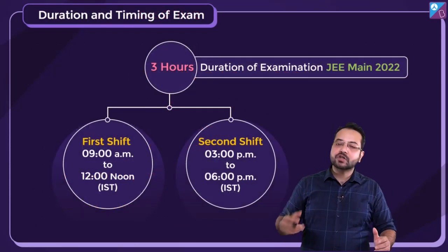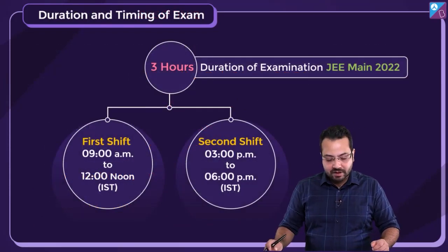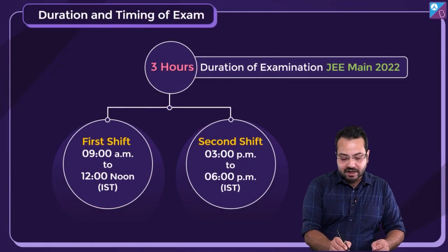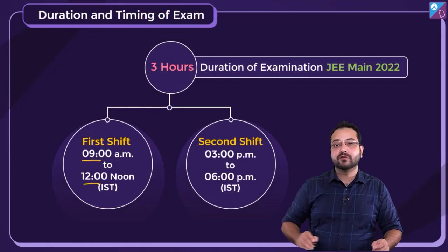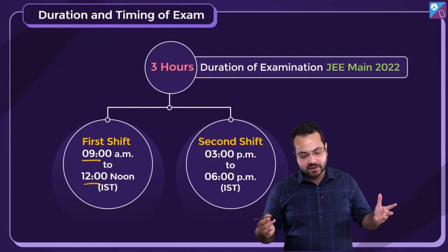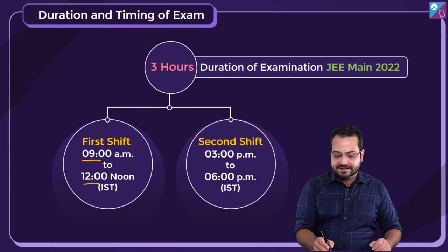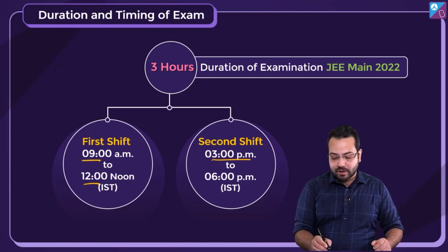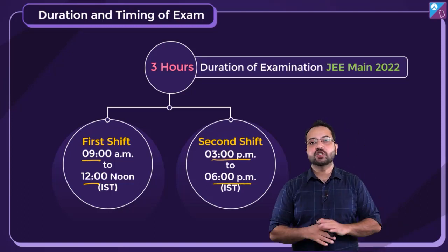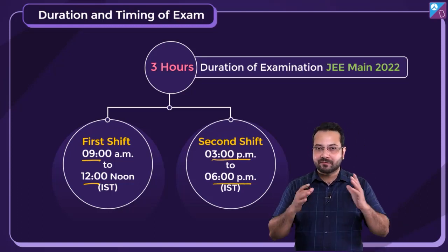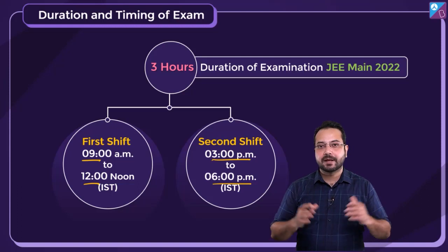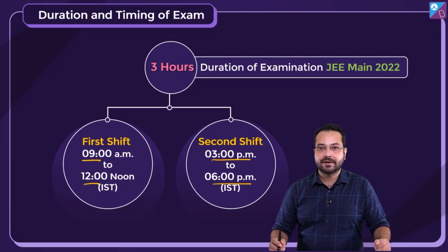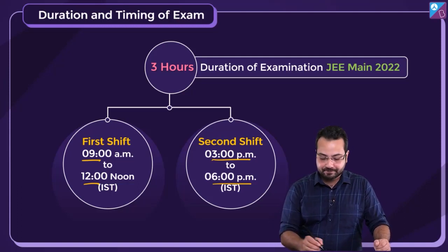What is the duration of the exam? The first shift is going to be from 9 a.m. to 12 noon, which is 3 hours, and the second shift is going to go from 3 p.m. to 6 p.m. Make sure you sleep well before the exam and are well rested.